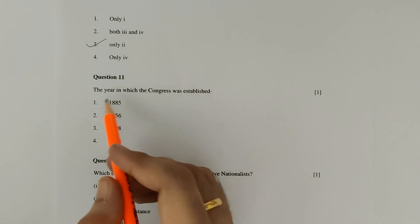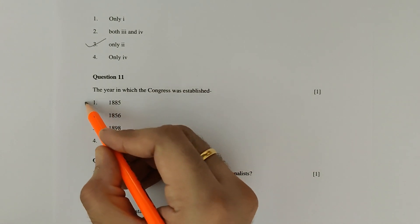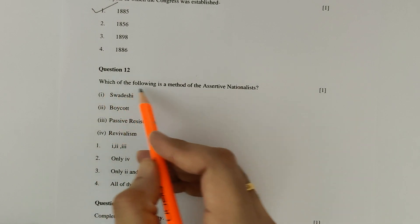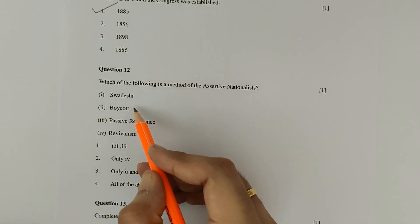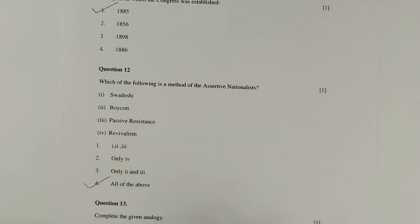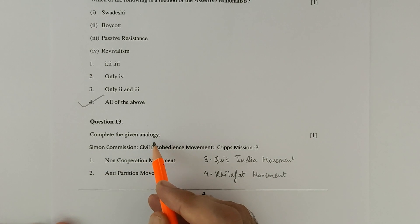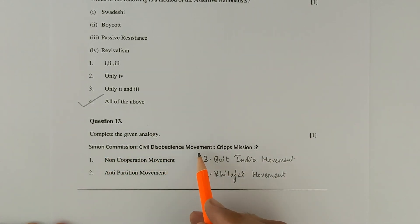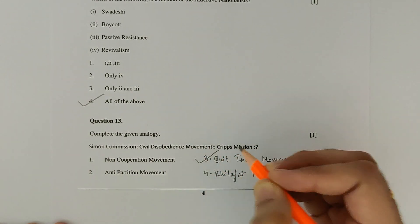Question 11: The Indian National Congress was established in the year 1885 — option 1 is correct. Question 12: Methods of assertive nationalists include boycott, passive resistance, and revivalism — option 4, all of the above, is correct. Question 13 is another analogy: Simon Commission is to Civil Disobedience Movement as Cripps Mission is to — ? The answer is the Quit India Movement, which is option 3.